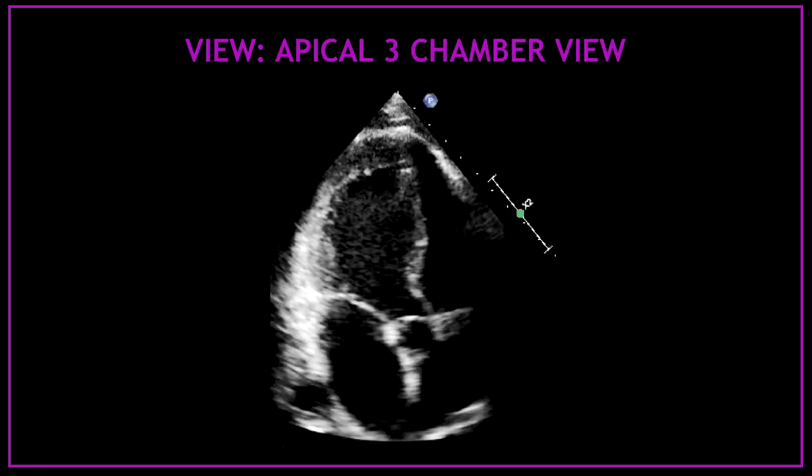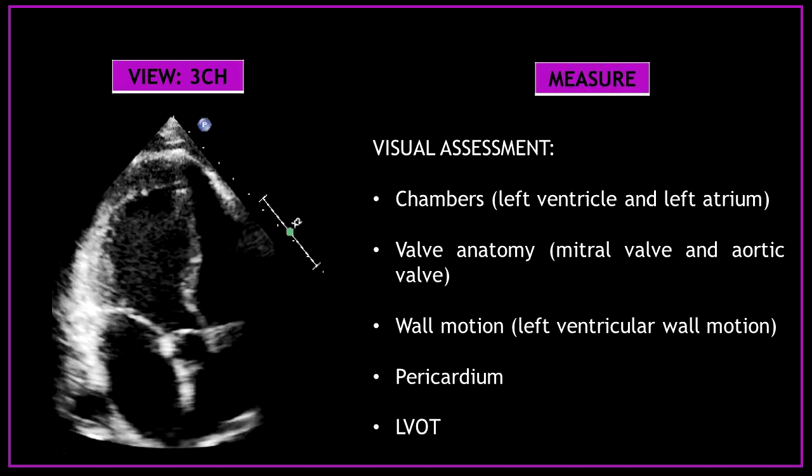Now let's continue with the apical 3 chamber view. First, obtain an apical 3 chamber view and perform a visual assessment of the cardiac chambers — the left ventricle and the left atrium. Also assess the mitral valve anatomy, aortic valve anatomy, and the left ventricular wall motion. Don't forget to have a look at the pericardium and the left ventricular outflow tract.